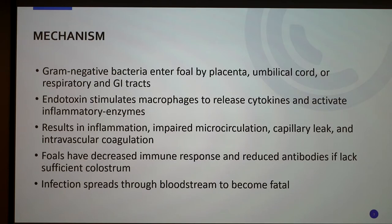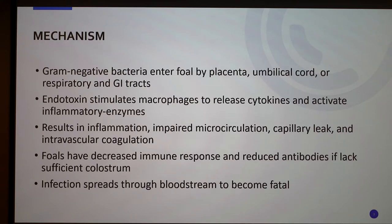In foals, it's usually gram-negative bacteria. It enters through the placenta, the umbilical cord, or the respiratory and GI tracts. The endotoxin put off by the bacteria stimulates the macrophages of what little immune system they have to release cytokines, and these cytokines activate the inflammatory enzymes. This results in a large amount of inflammation, which can cause impaired circulation, capillary leakage, and intravascular coagulation — basically a blood clot within the blood vessels.